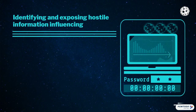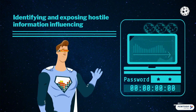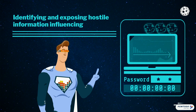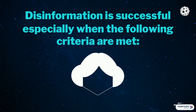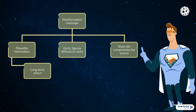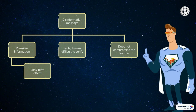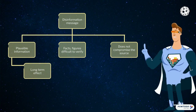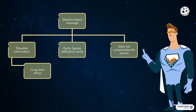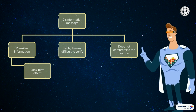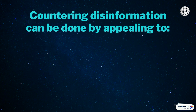Identifying and exposing hostile information influencing. While identifying hostile information influencing may have been the appanage of professional journalism and the state, with the advent of social media, it becomes more and more imperative for all social media content producers and consumers to be able to both spot and expose it. For a disinformation message to succeed, it needs to present information that is not true, or at least not entirely true, but that is plausible and could be true, with a long-term effect. It most often makes use of pseudoscience and presents so-called facts and figures that are difficult to verify, and is created so as not to compromise its primary source.